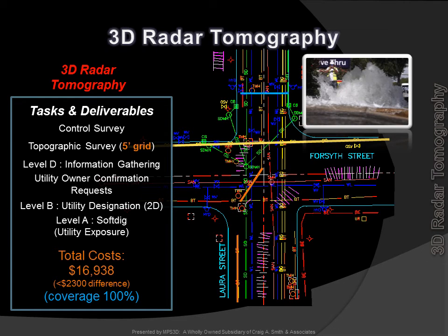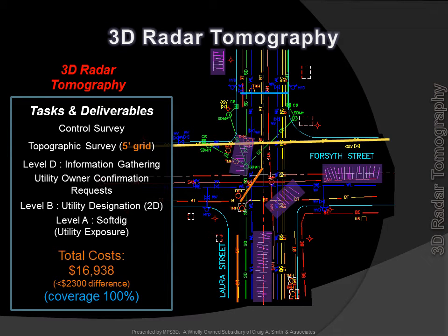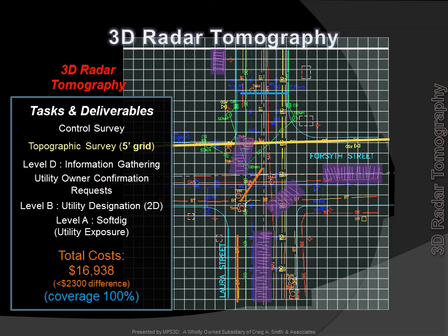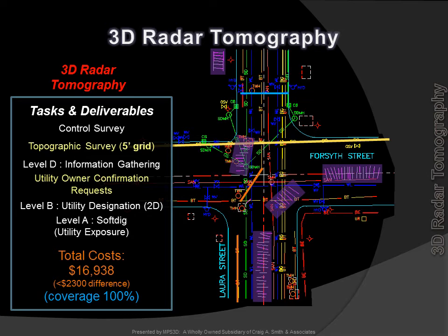A water main crossing missed by the traditional SUE effort is located by RT, saving potential damages and public inconvenience. Previously unknown buried railroad tracks are discovered by RT — an item that SUE efforts do not look for nor find. Discovery of anomalies such as railroad tracks could save untold thousands in conflicts and delay claims. 3D RT provides a topo grid at 5-foot intervals, virtually assuring no missed facilities and providing for the ability to create a very tight TIN (triangulated irregular network) model — a potential major plus for the designer. Improved survey data, improved facility location accuracy — 100% 3D coverage for nearly the same cost as traditional SUE.